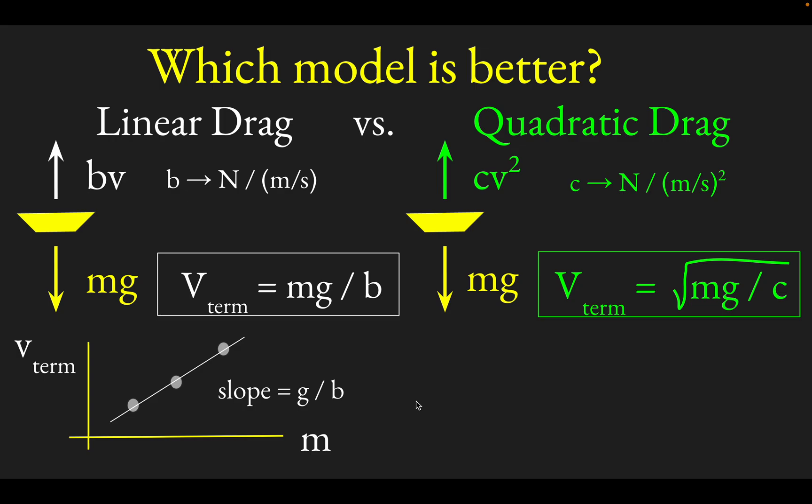In the case of quadratic drag, you make a similar graph, but instead of plotting V-terminal against mass, you actually would want to plot V-terminal against square root of mass because you can see from this relationship that the terminal velocity is proportional to the square root of mass.